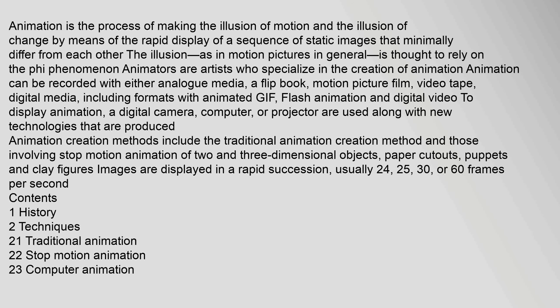Animation creation methods include the traditional animation creation method and those involving stop motion animation of two and three-dimensional objects, paper cutouts, puppets, and clay figures. Images are displayed in a rapid succession, usually 24, 25, 30, or 60 frames per second.